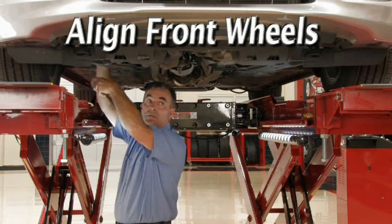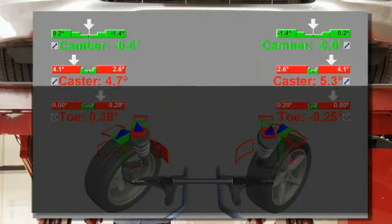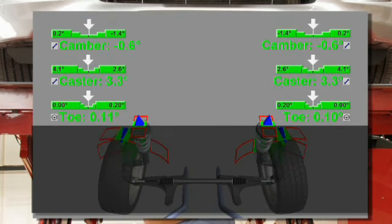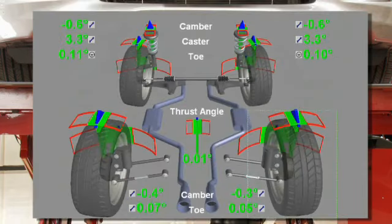To finish, align the front wheels to specifications. As a general rule of thumb, adjust camber first, then caster if it is adjustable, and finally toe and center steering.